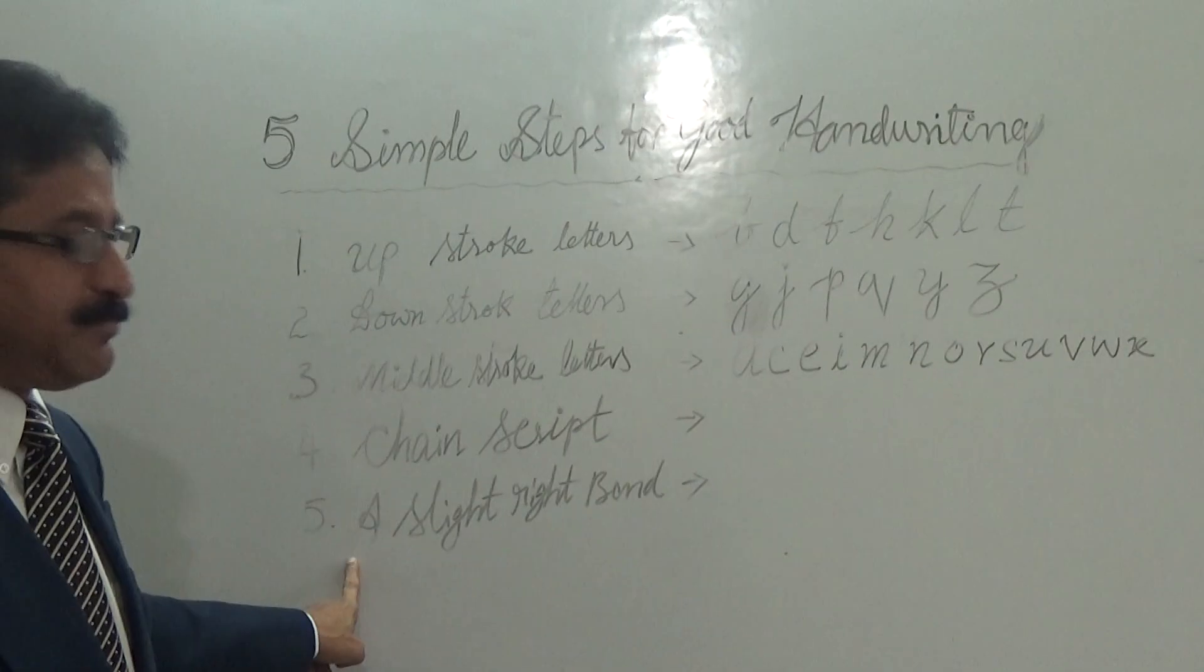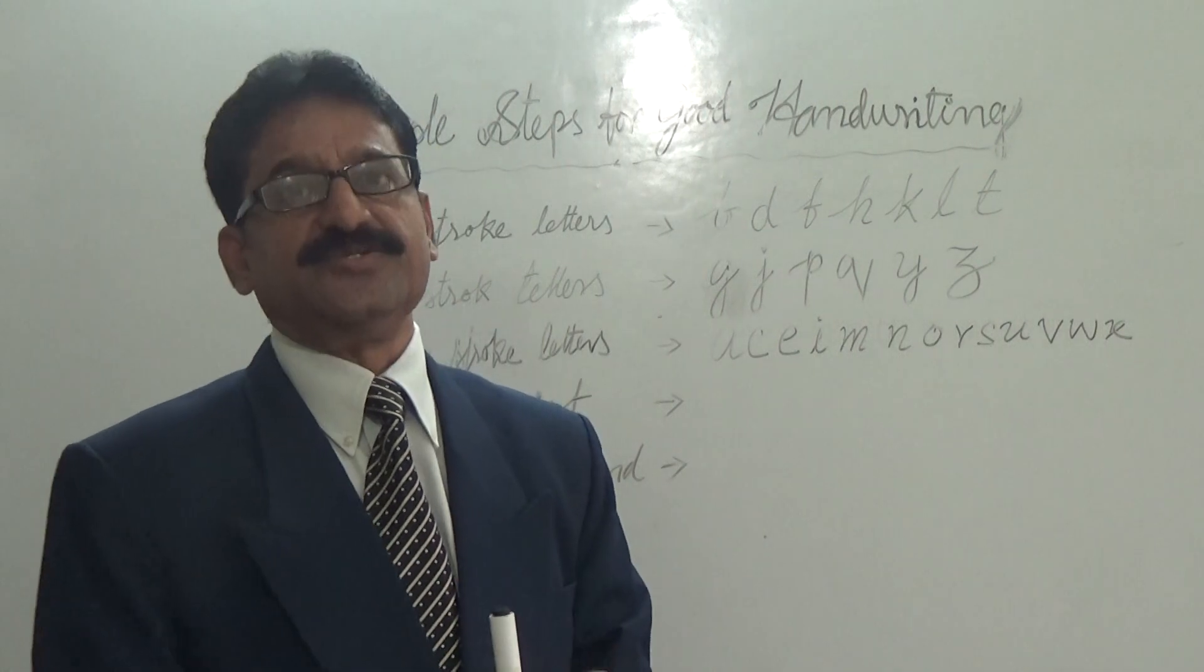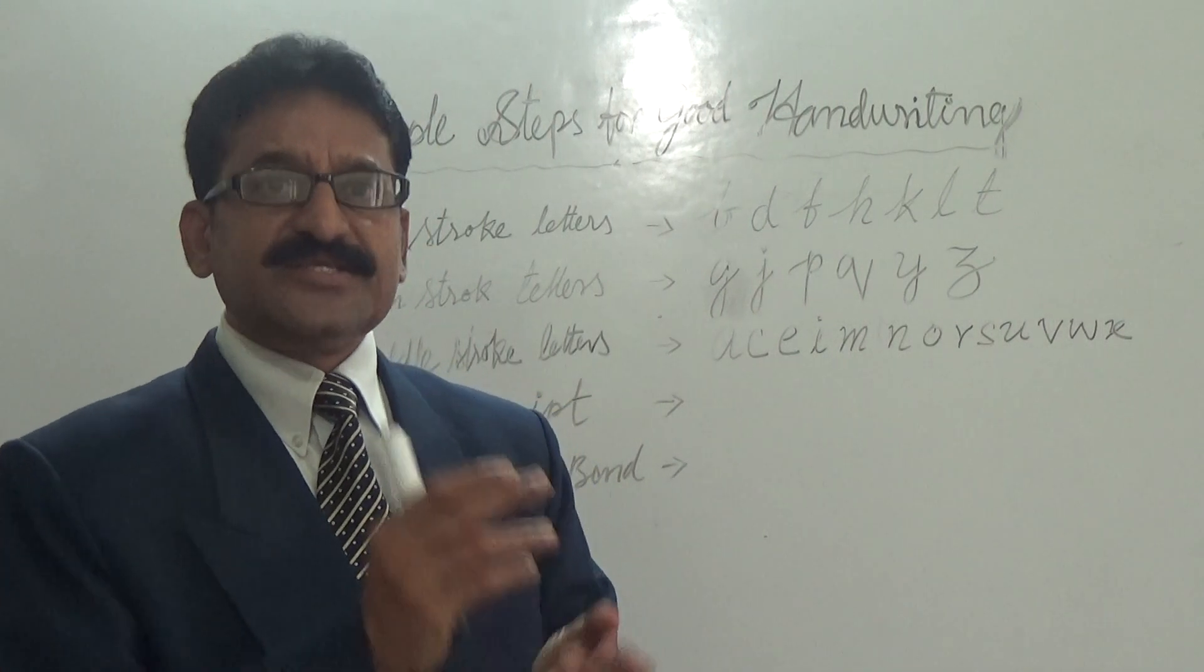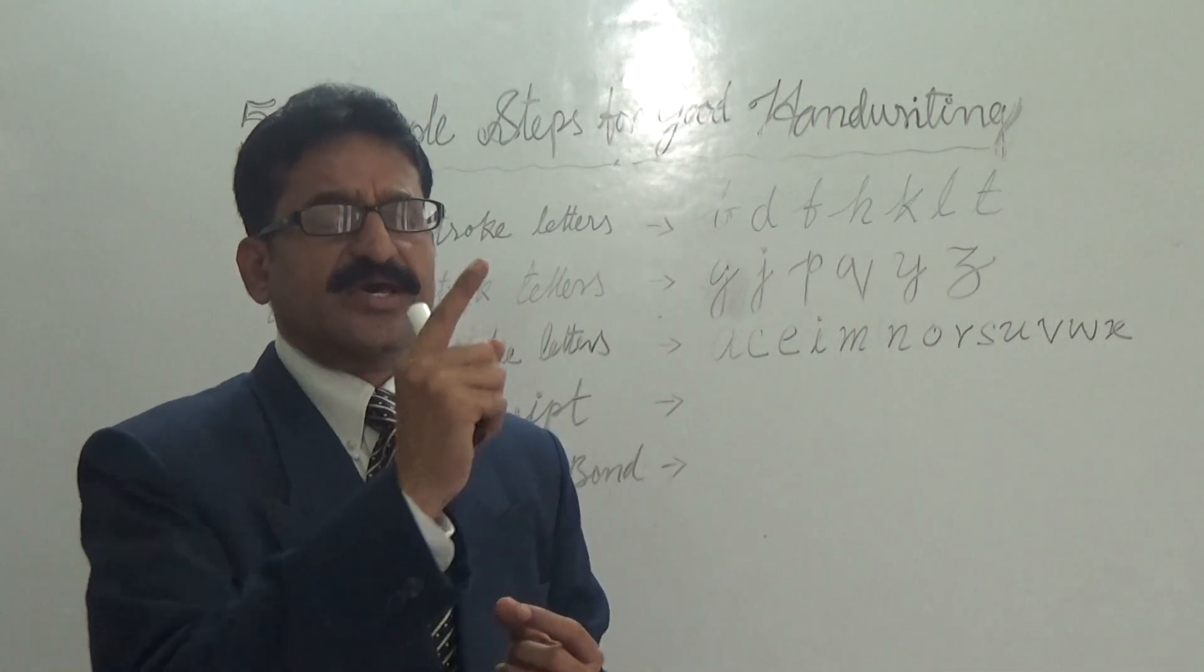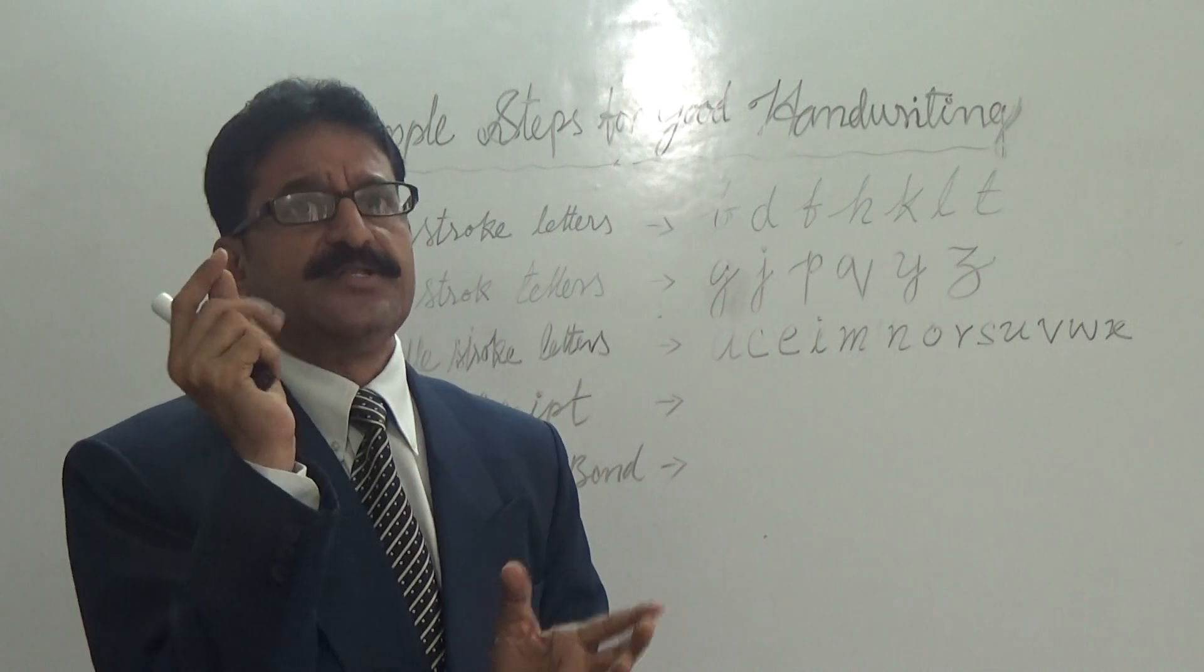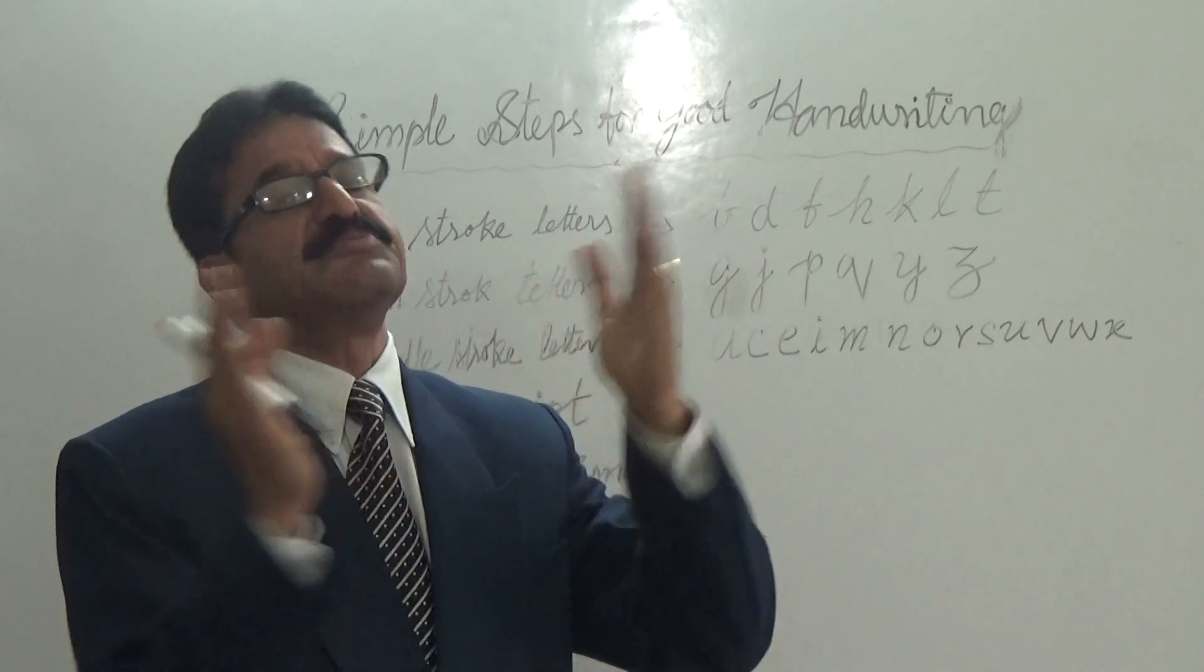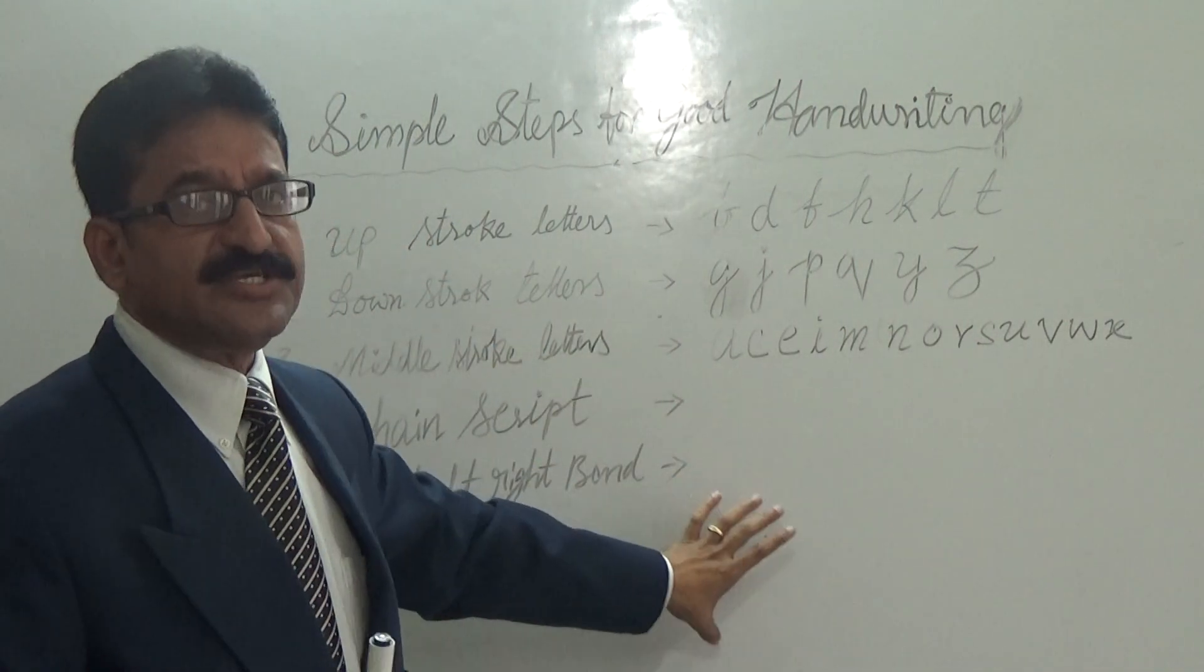And the fifth point is all about a slight right bend. While we write letters in the chain script, instead of straight letters, vertical straight letters, one point, simple right word bend that makes the writing impressive. So these are the five steps we have to keep in mind.